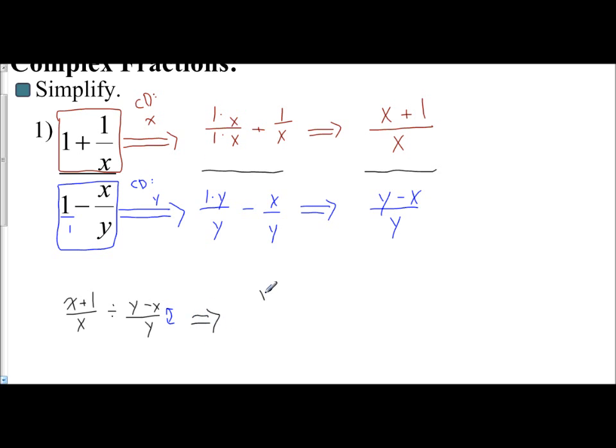And so the first one stays the same, x plus 1 over x. And you flip the second one, so the y goes on top and the y minus x goes on the bottom. And then I just multiply. I have y times x plus 1 on the top, and I have x times y minus x on the bottom. And we just leave that alone as is. It cannot be simplified from there.